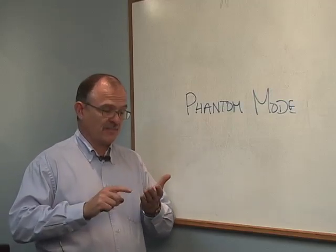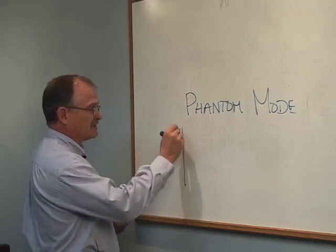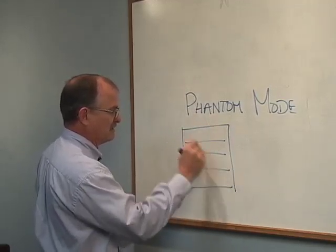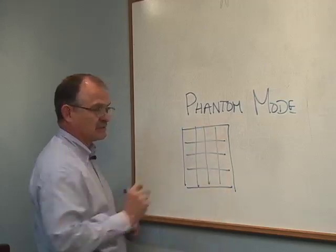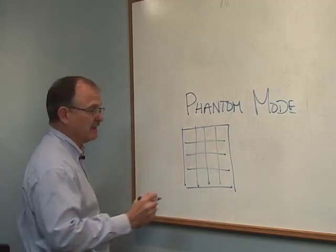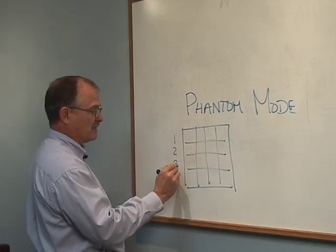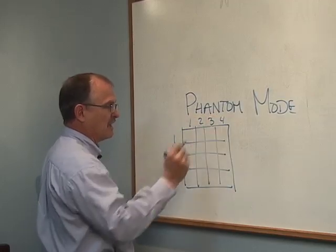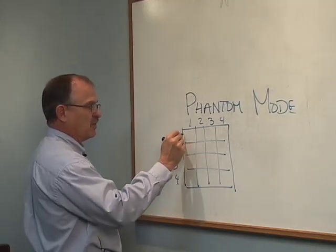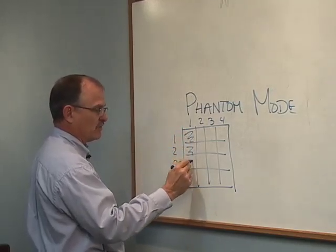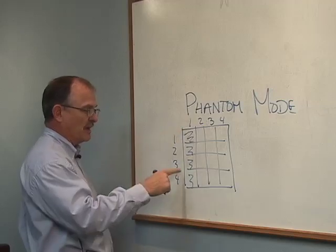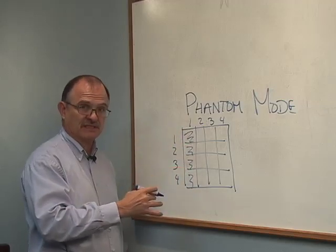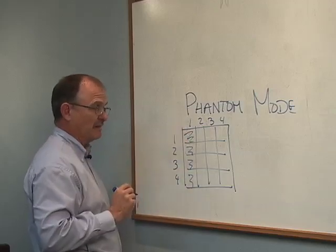If you have inputs and you're setting up cross points — let's say we have a 4x4 matrix here. These are inputs one, two, three, and four, and these are outputs one, two, three, and four. If we activate inputs one, two, three, and four to output one, these four microphones will interact with each other in the automix algorithm to output one.